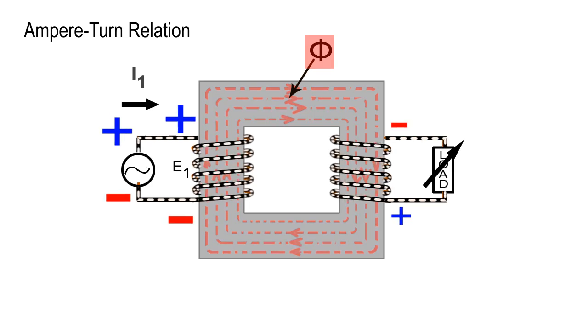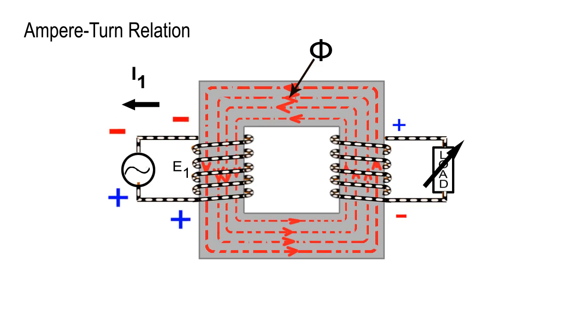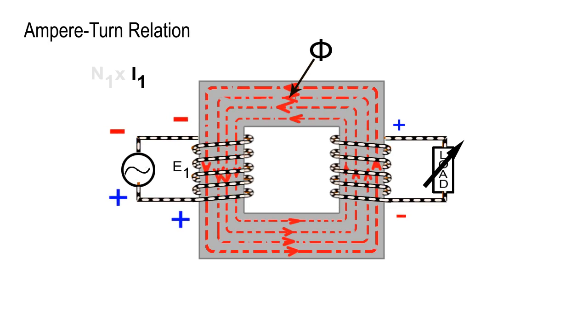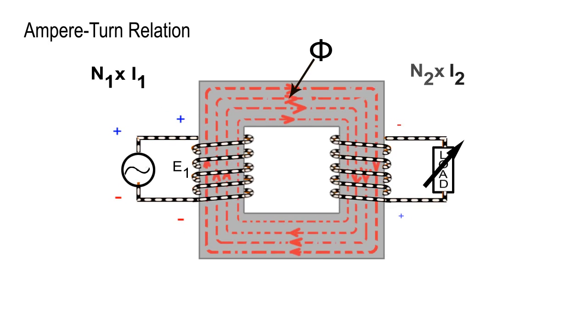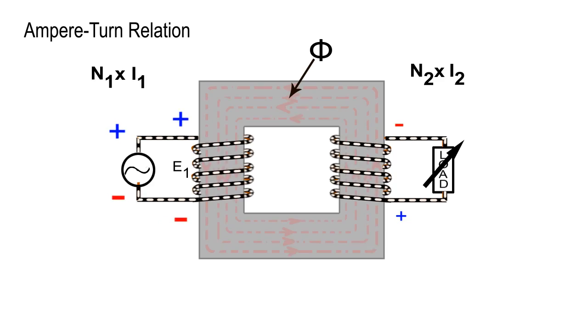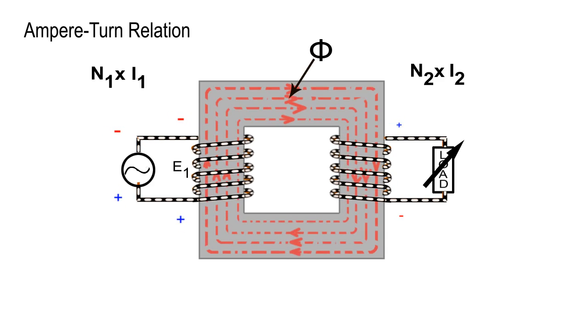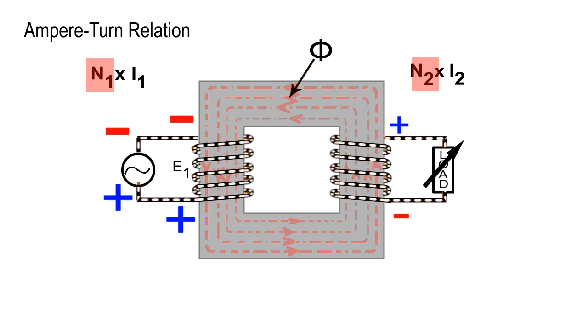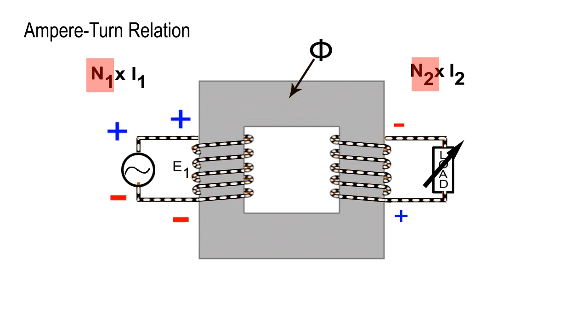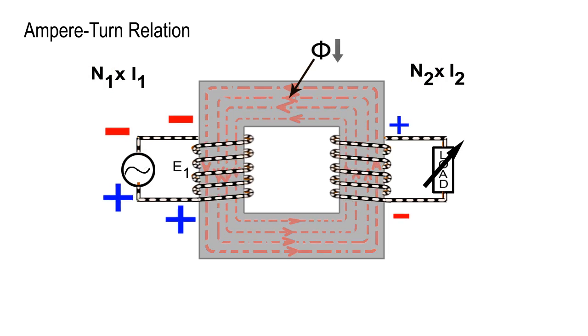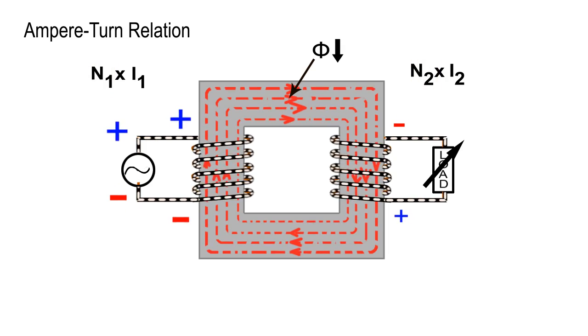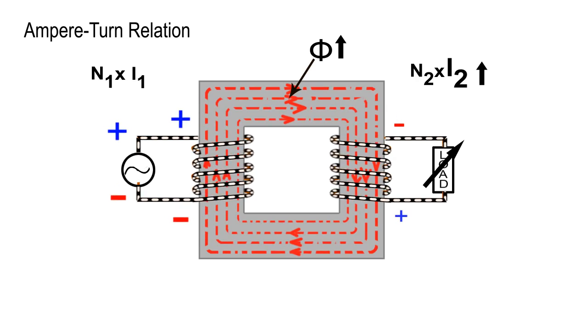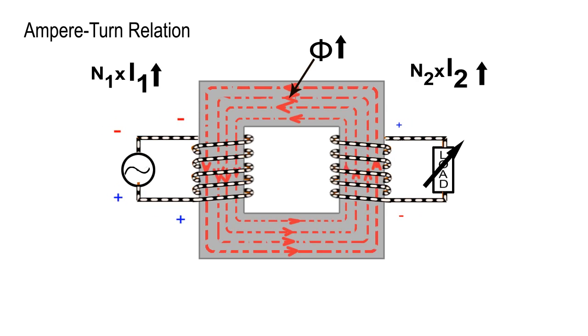Hence, the primary draws a current I1 from the AC mains such that the primary ampere-turns, i.e., N1I1, is equal to the secondary ampere-turns, i.e., N2I2. As the number of primary turns N1 and secondary turns N2 cannot be changed, this reduction in the main flux because of increase in secondary winding current can only be compensated by increase in primary current.